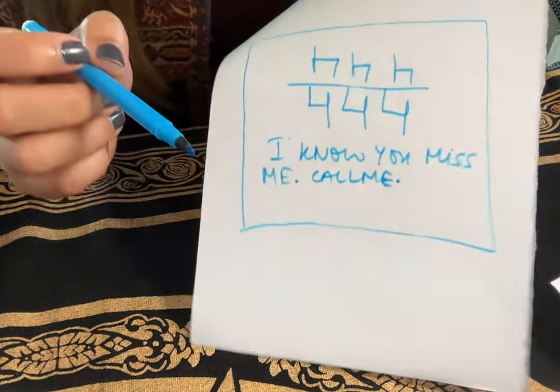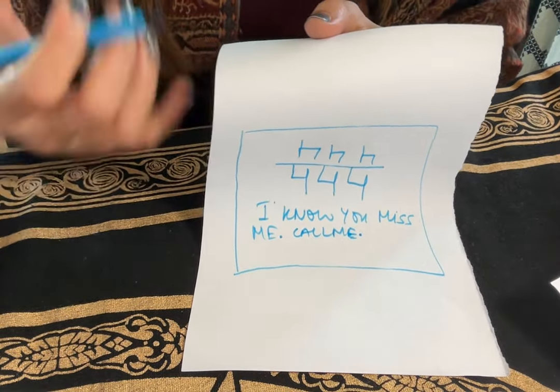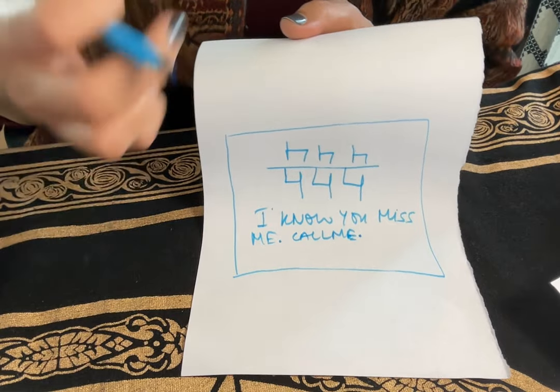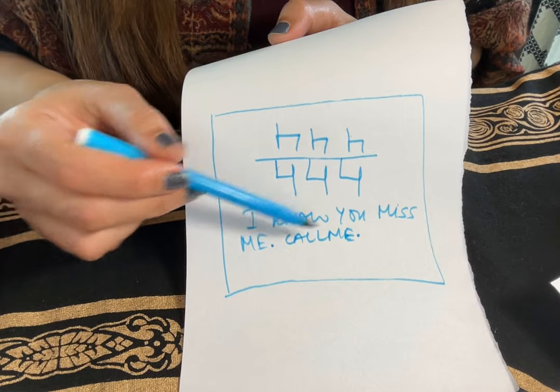You can write 'meet me' if you want them to meet you. If you haven't seen them for a long time, probably it's difficult for them to see you. So the universe will make a way for them to see you. So 'I know you miss me' - you can write 'call me' here, or 'come and meet me,' whatever you want, or 'message me.'